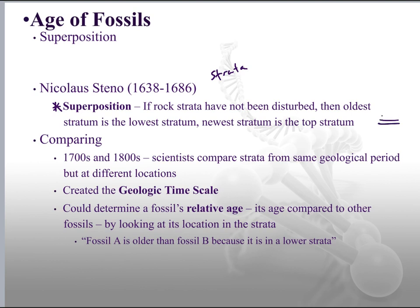If you're looking at the side of a cliff, you can see different layers of rock. The stuff down at the bottom is the oldest; the stuff up at the top is the newest. Steno was really the first one to explain that.